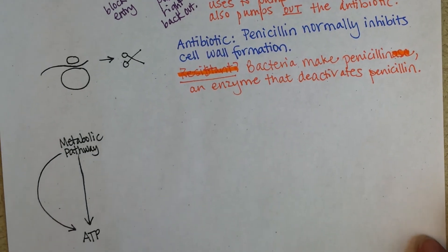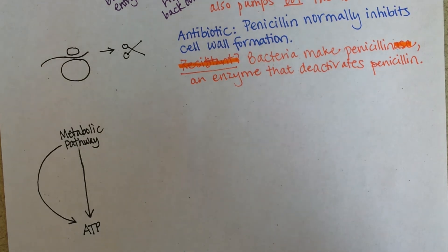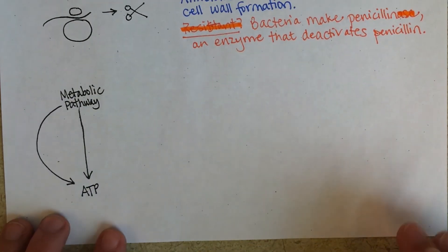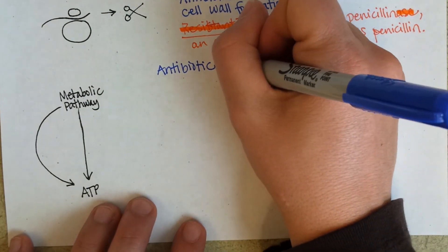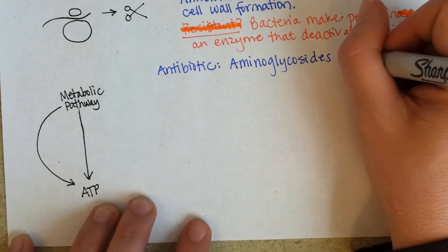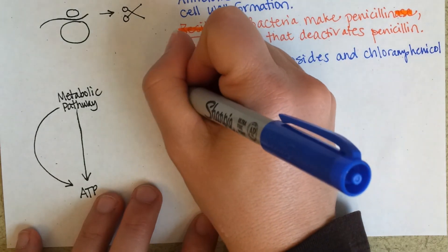Let me give you one more way. So if you think about the three ways so far: one is that bacteria build their cell wall differently so the antibiotic can't inhibit it; two is that they block a channel the antibiotic normally comes in through, or pump it right back out; three is that the bacteria make an enzyme that disables the antibiotic. And then we'll look at one more way. These aren't all of the ways — just a few famous ones. This next one involves aminoglycosides and also chloramphenicol, which normally work by inhibiting protein synthesis.